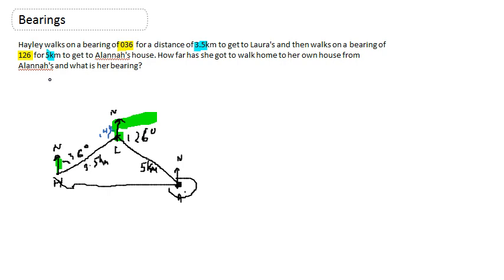I noticed that if that's 144 and that's 126, and the whole thing has to add up to 180, then this angle must be a right angle. That's key, because now I can work out the length of this side using Pythagoras, since that's a right angle. So I've now got a triangle that's 3.5 kilometers on one side, there's my right angle, and that's 5 kilometers on the other.